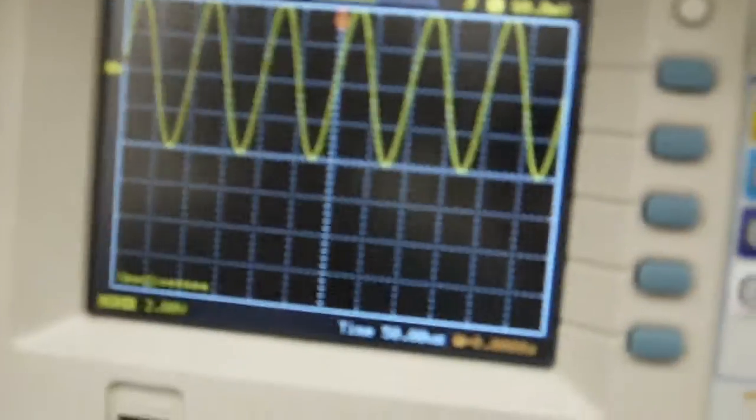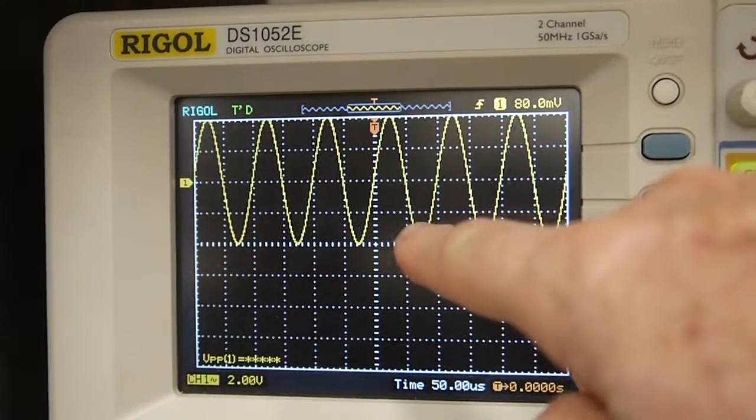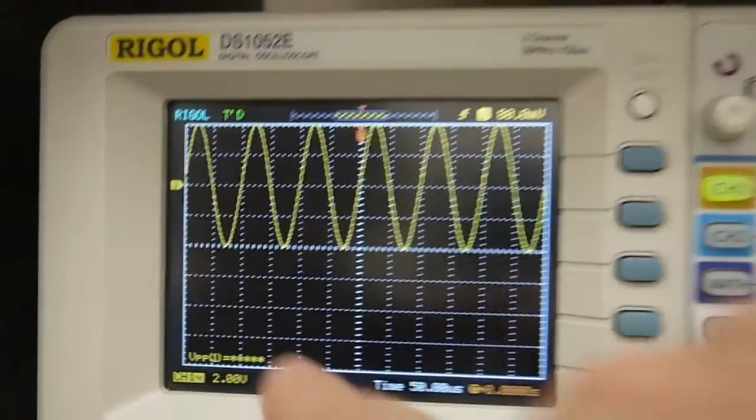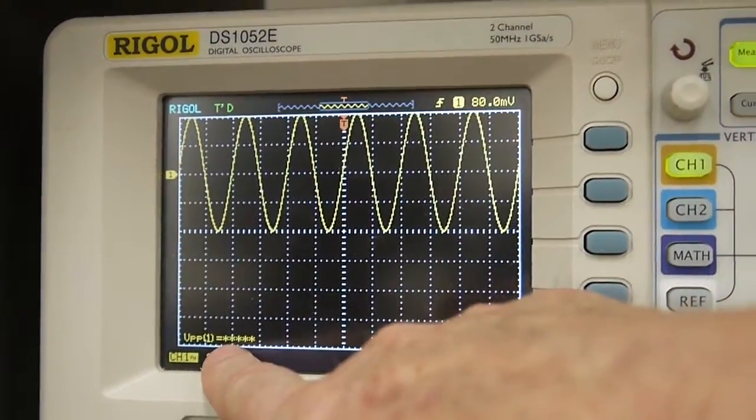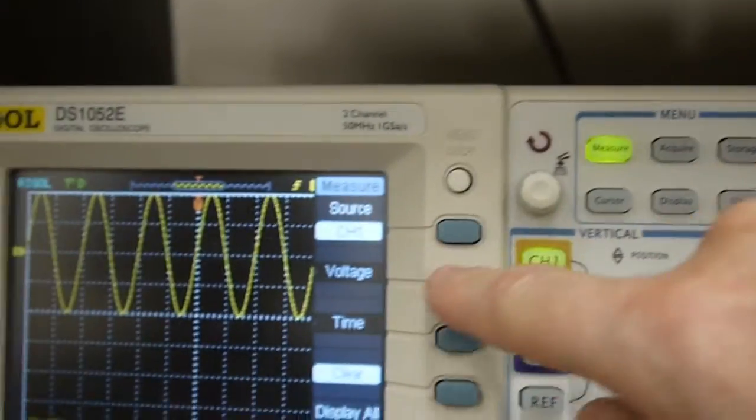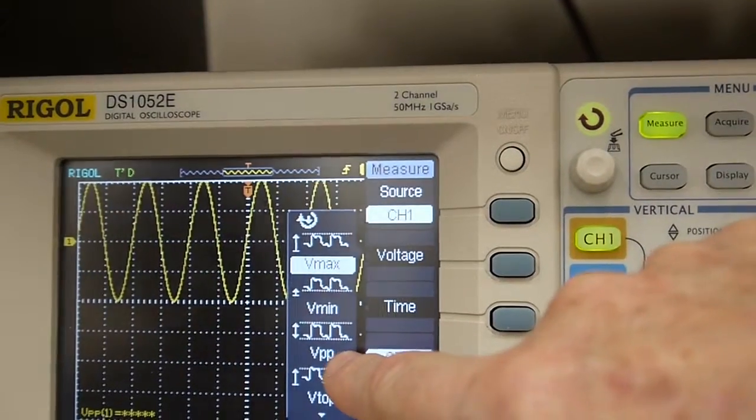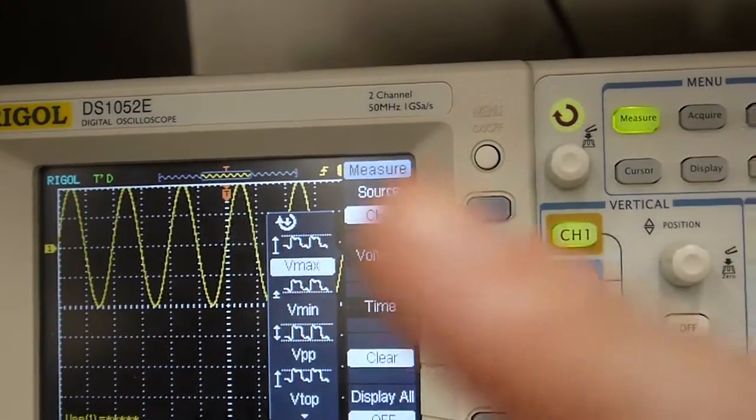So now we've got 2 volts per division being displayed. And now we've got something that we can see on the screen. The volts peak to peak that we set up before by going measure and then coming down to voltage and then selecting the peak to peak.